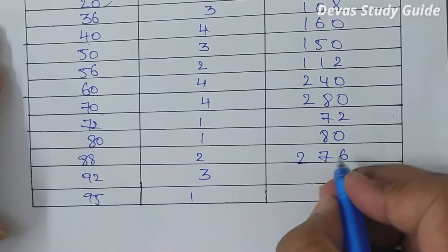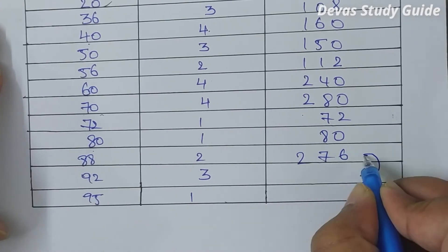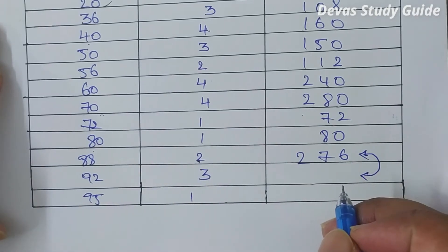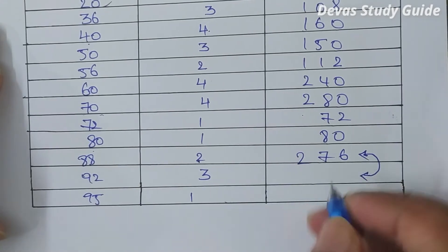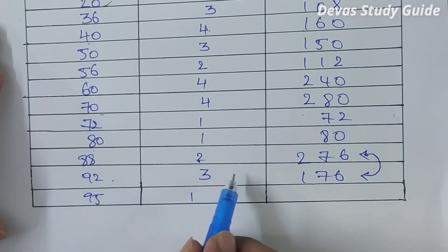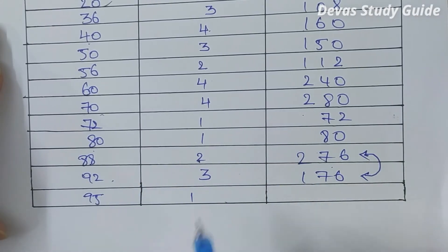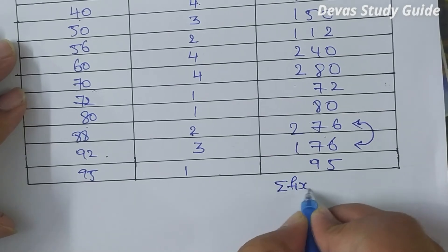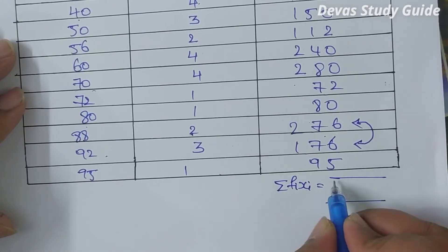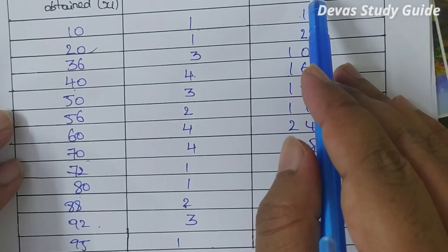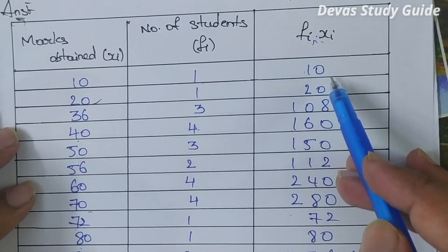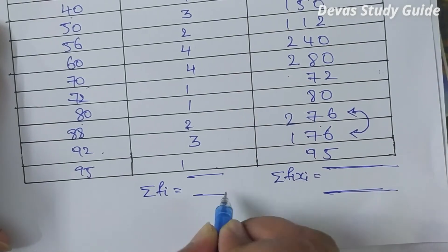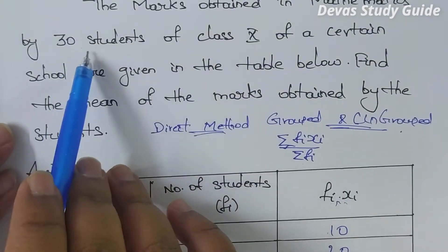Continuing the fixi products: 1×95 = 95. Now we add all the fixi values using the formula. Sigma fi — the total number of students — adds up to 30. We now add all the sigma fixi values together.